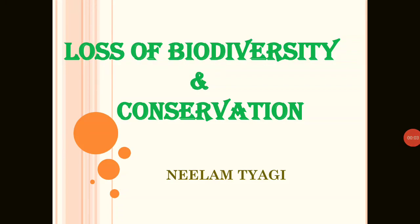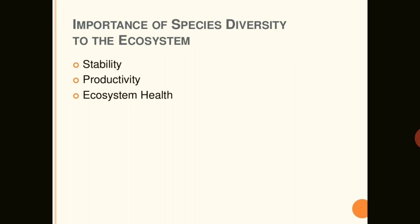Hello class, our today's topic is loss of biodiversity and its conservation. The number of species in a community really matters to the functioning of the ecosystem, because rich biodiversity is very important for the stability, productivity, resilience, alternative pathways, and health of the ecosystem. Ecologists consider that communities with more species tend to be more stable than those with fewer species.